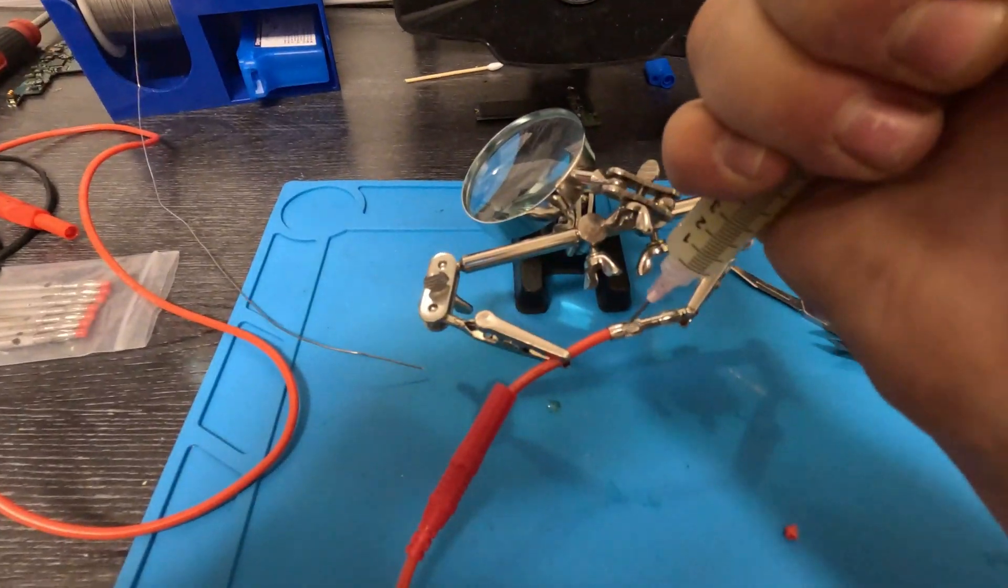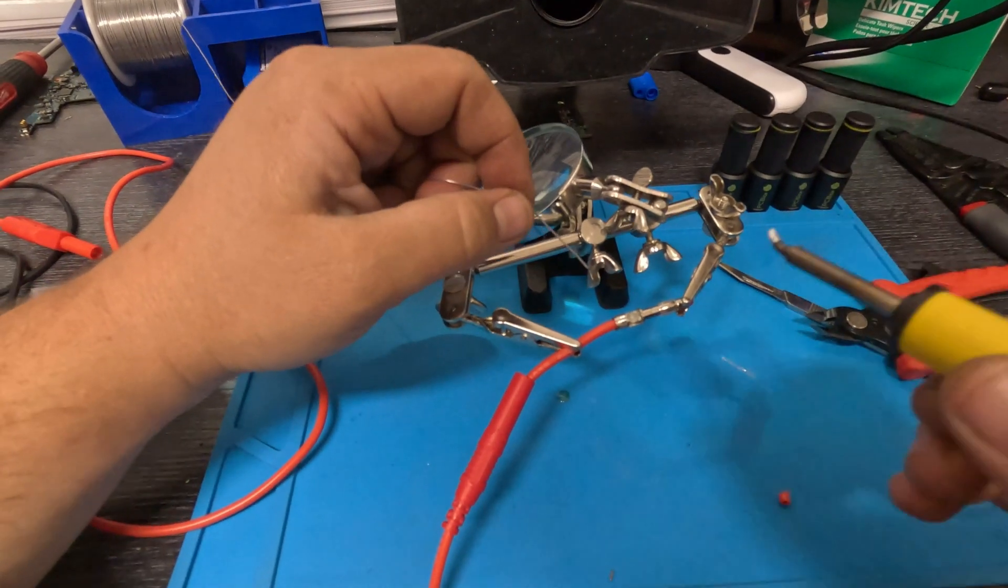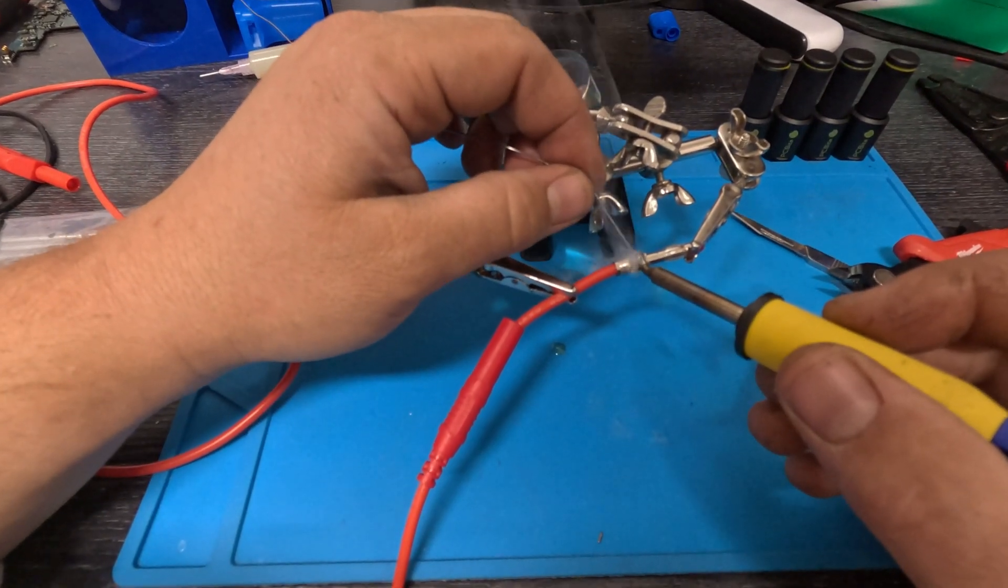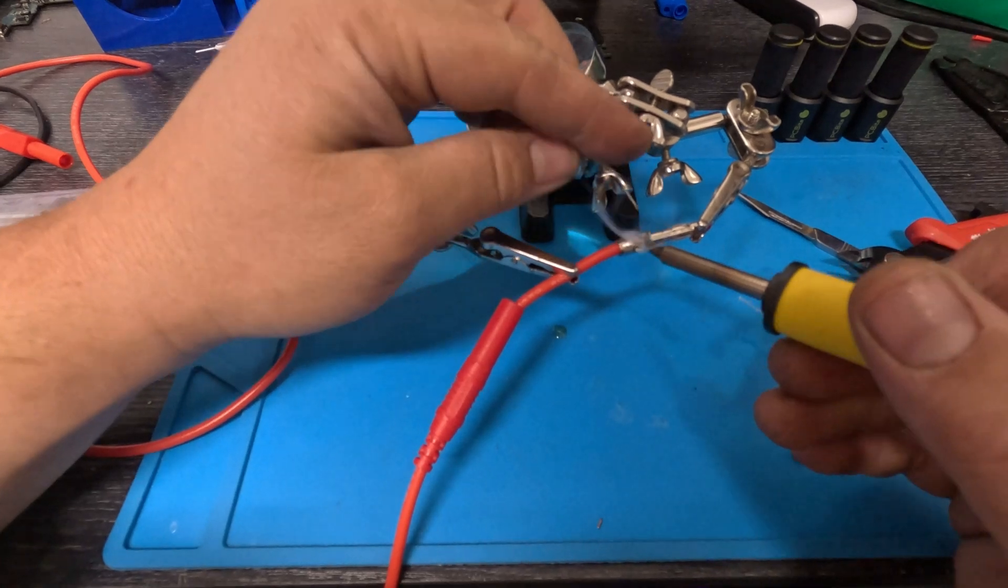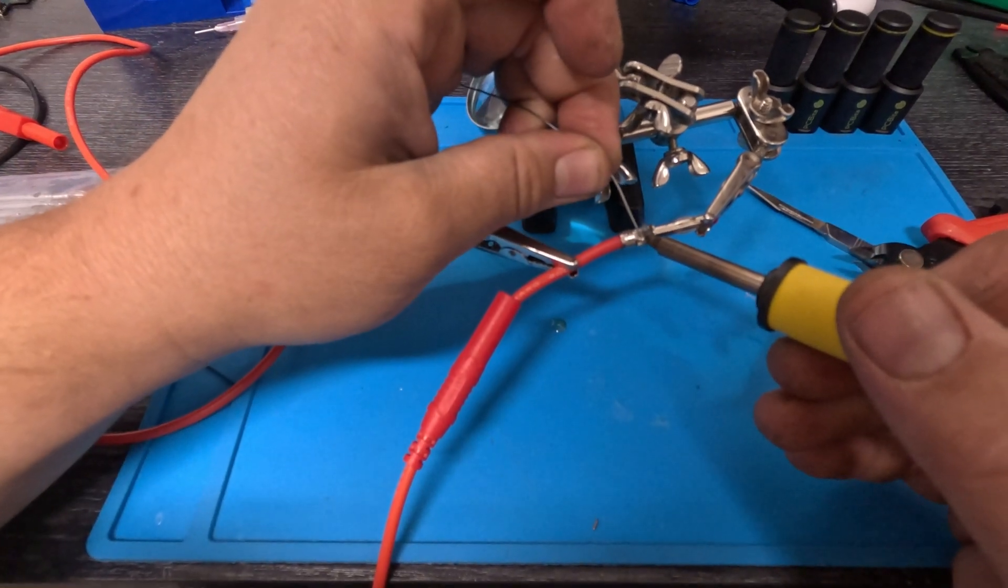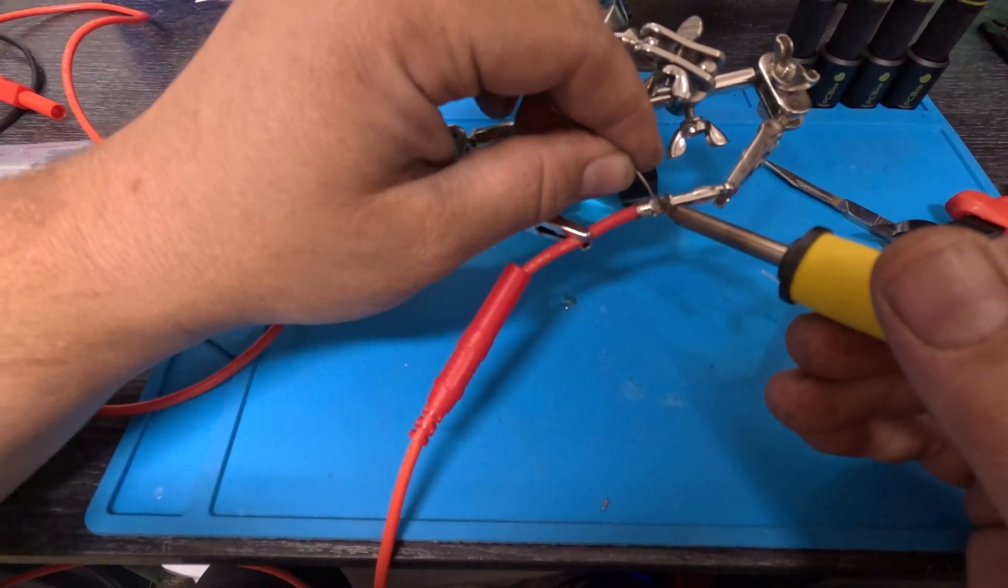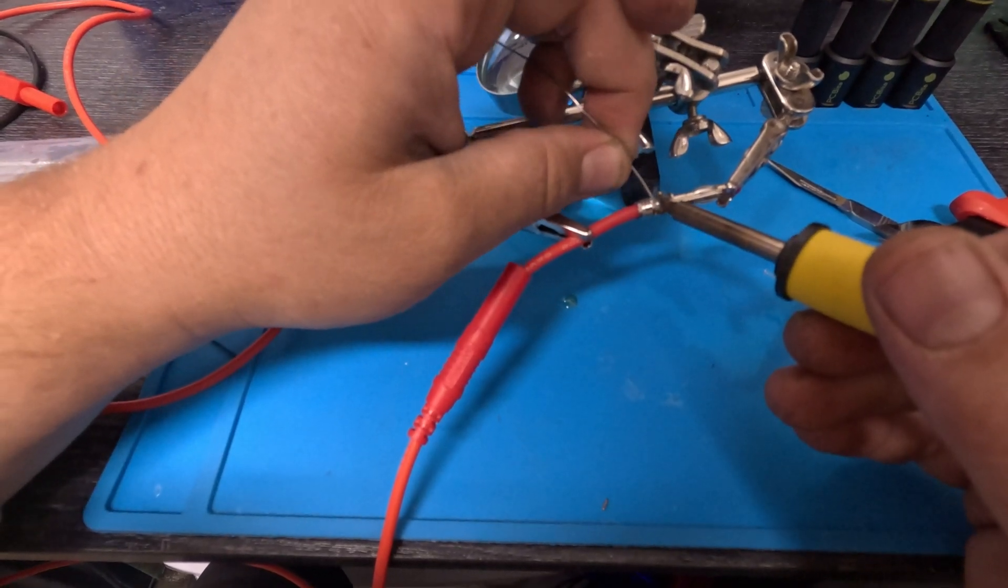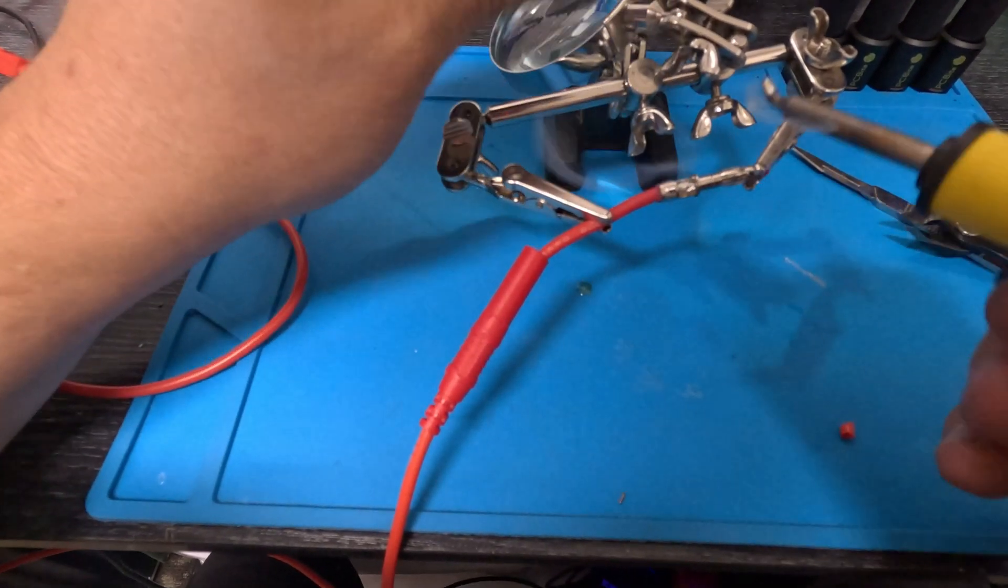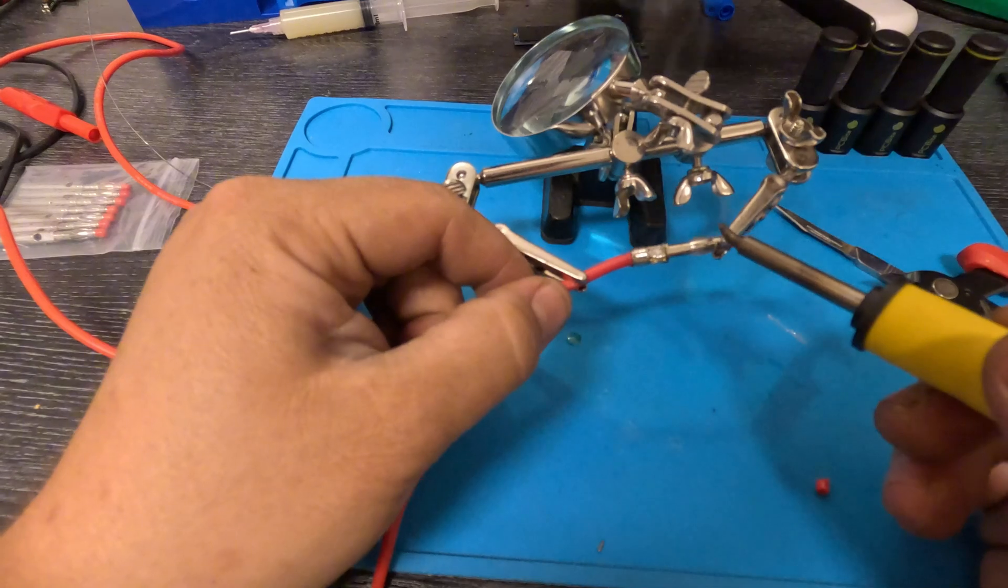Put some flux. I'm going to melt this over here. The flux draws it into the wire. I'm going to let it dry.